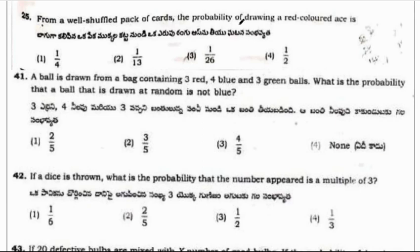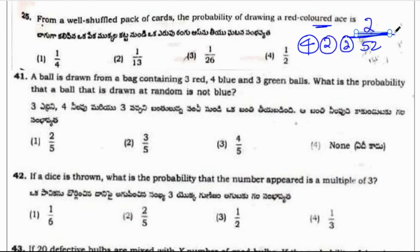From a well shuffled pack of cards, the probability of drawing a red colored ace is. A deck of cards or pack of cards will have 52 cards. A red colored ace, so there will be 4 ace cards in a deck of cards. And there will be red color 2, black color 2. So option is 2 by 52 which is 1 by 26. Correct option is option 3.